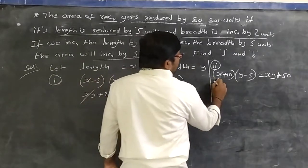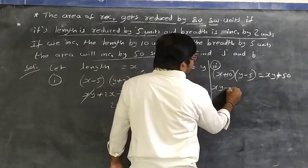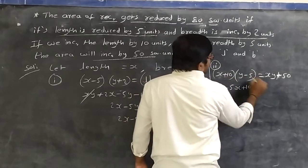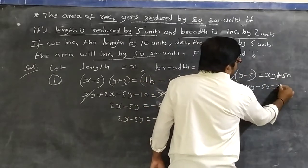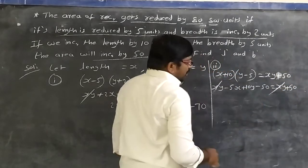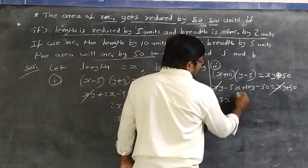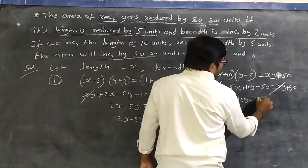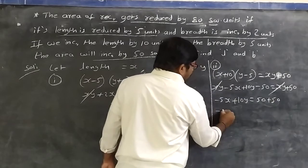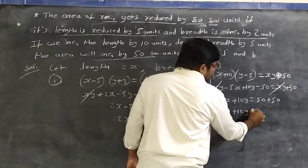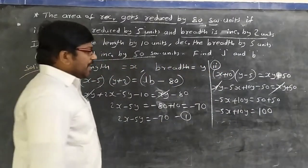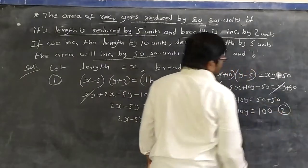Expanding (x + 10)(y − 5): xy − 5x + 10y − 50 = xy + 50. The xy terms cancel, giving −5x + 10y − 50 = 50, so −5x + 10y = 100. That is equation 2.